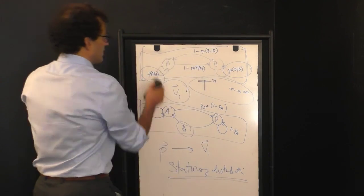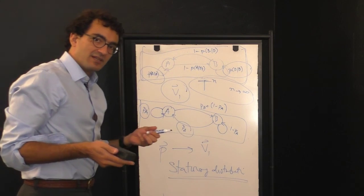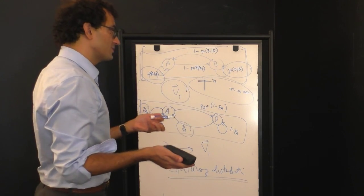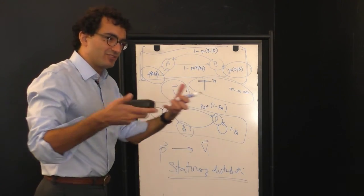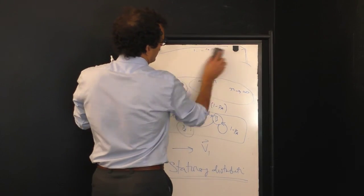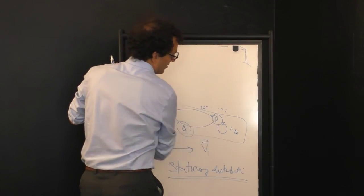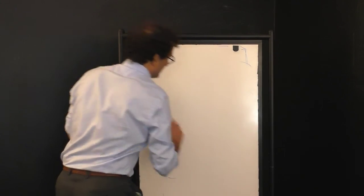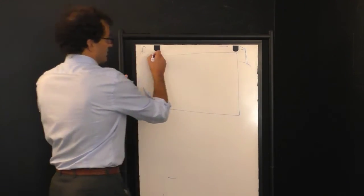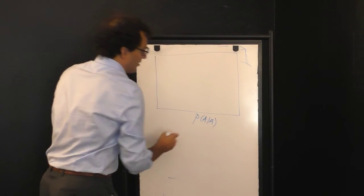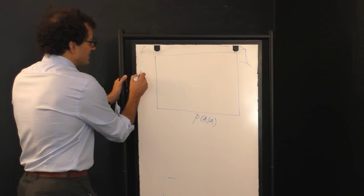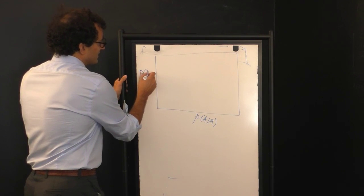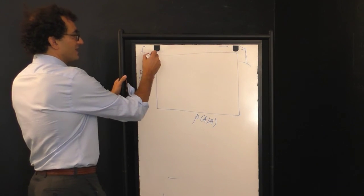And so in fact, one way to imagine the limit of this coarse-graining process, how all of these different Markov chains flow, is in a following diagram, which we sometimes call phase diagram for this system, which I can draw like this. On the x-axis, we have the self-loop probability for the A state, and on the y-axis we have the self-loop probability for the B state.